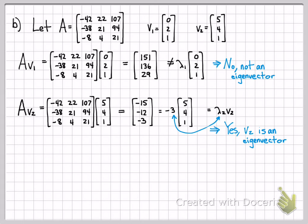So that concludes this short example. How do you check if a vector is an eigenvector of a matrix? You simply do the matrix vector multiplication and see if you can factor that into a fixed constant scalar times the original vector. If you can, that factor is an eigenvector. If you cannot, like in this case, then it is not an eigenvector.